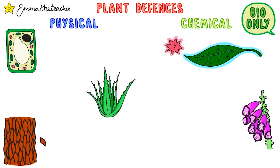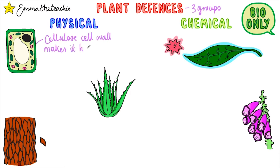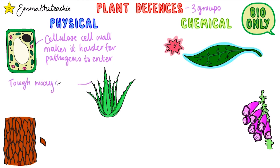Plant defenses can be split into three groups: physical, chemical and mechanical. Let's start with physical defenses. Plants have a cellulose cell wall that makes it harder for pathogens to enter the cells. The leaves can have a tough waxy cuticle that acts as an additional barrier to pathogens.